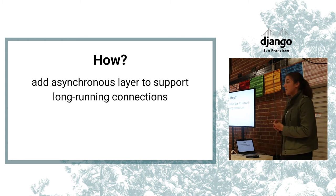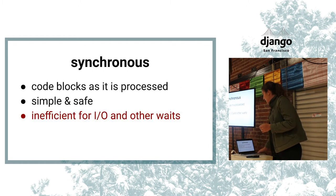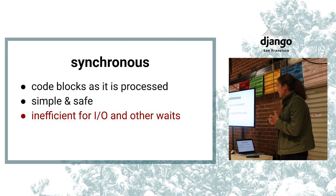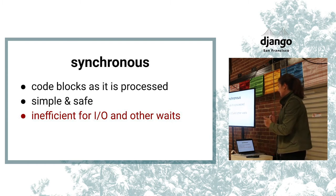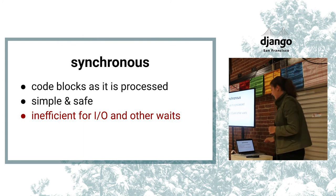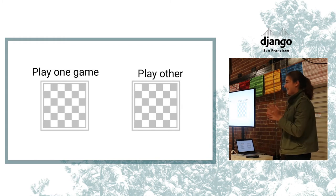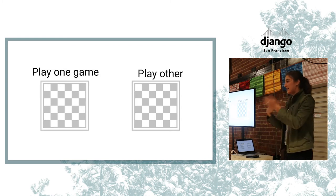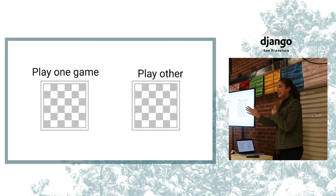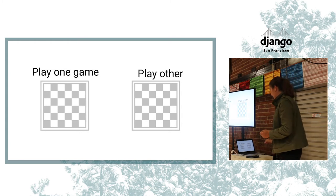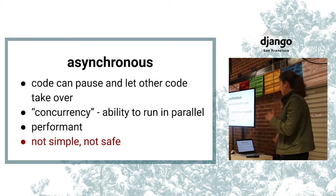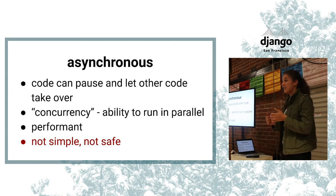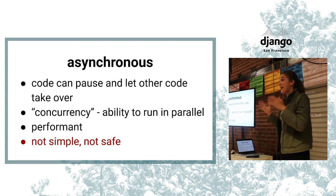Django Channels adds an asynchronous layer for supporting long-running connections. Typically code is synchronous, meaning it's blocking while processing — including waiting for I/O — which is inefficient but simple, easier to debug, and safe. Think of a chess player who plays one game, waits for the opponent, finishes, then plays the next game. With asynchronous code, when you're pausing — especially for I/O — you can go do something else, which is much more efficient.